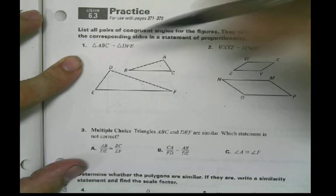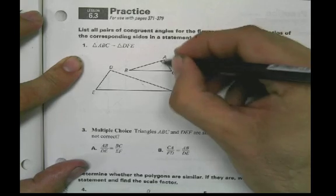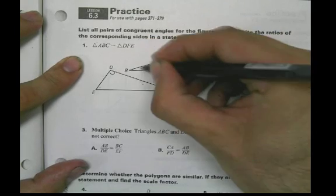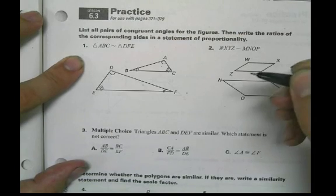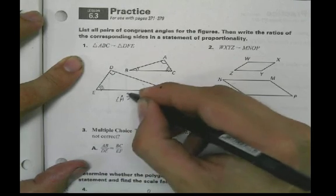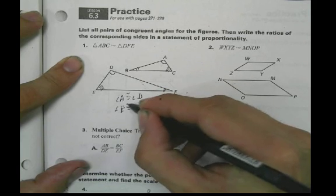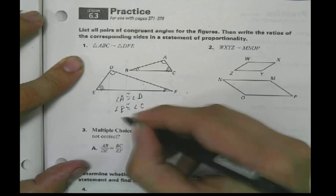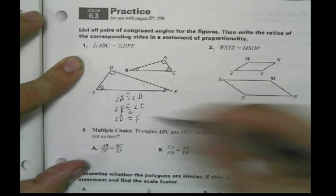ABC to DEF. Notice this is ABC, D, F, E. So this angle is going to be the same as this angle, this angle is the same as this angle, and this angle is the same as that angle. You could say angle A is congruent to angle D, angle E is congruent to angle C, and angle B is congruent to angle F, right?